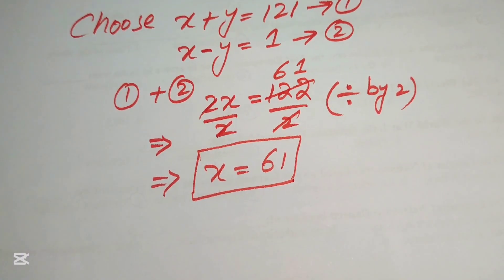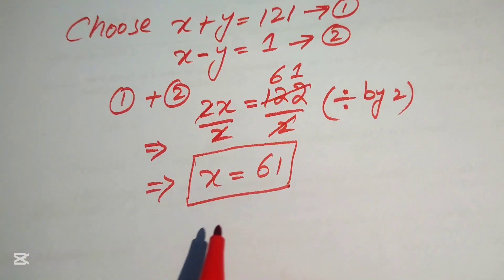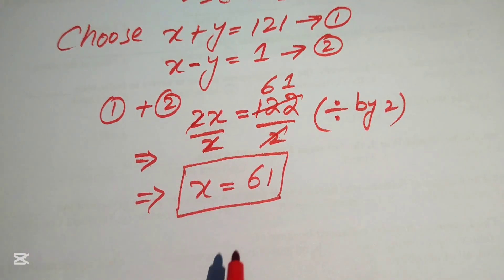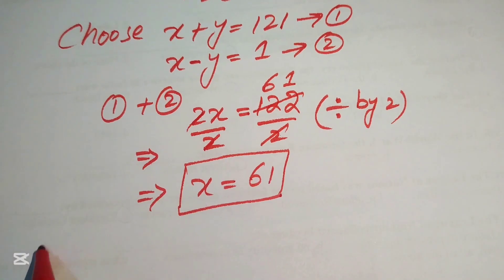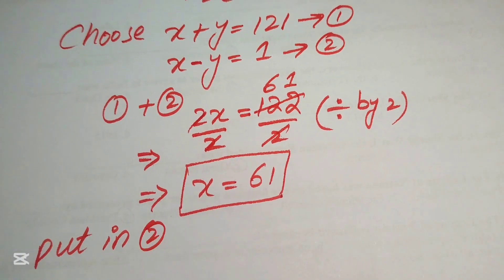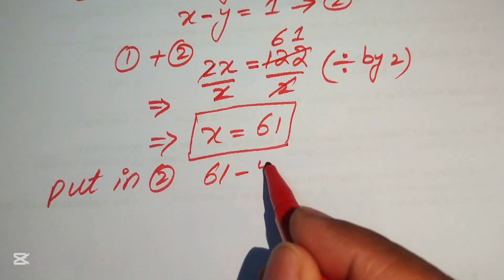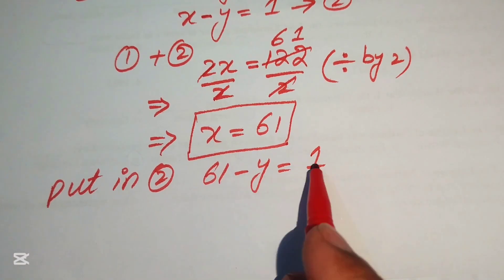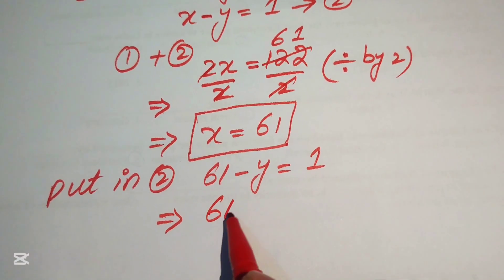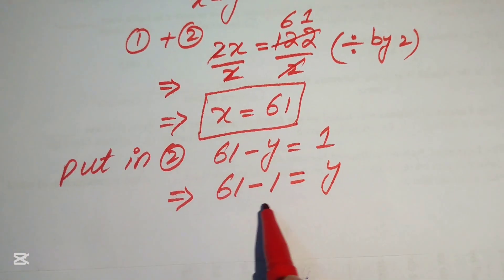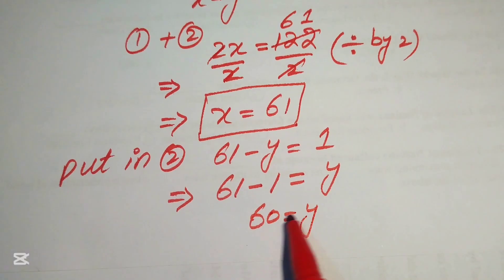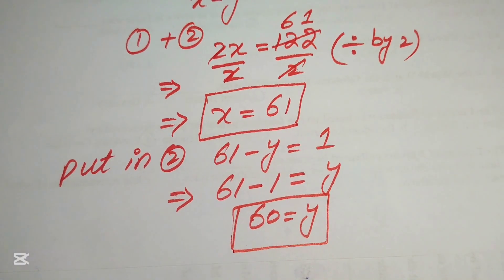Now we find the value of y. Substituting x equals 61 into equation 2: 61 minus y equals 1. Moving terms gives y equals 61 minus 1, so y equals 60. This is the value of the perpendicular or altitude side of the triangle.